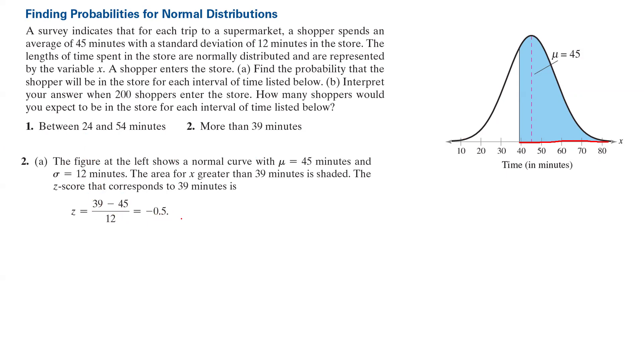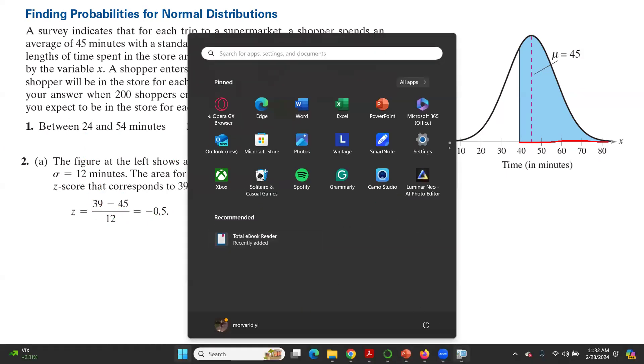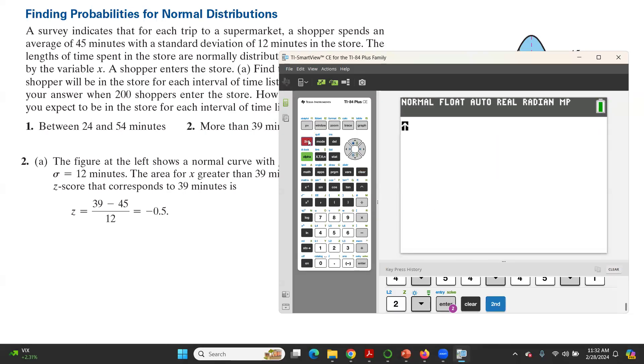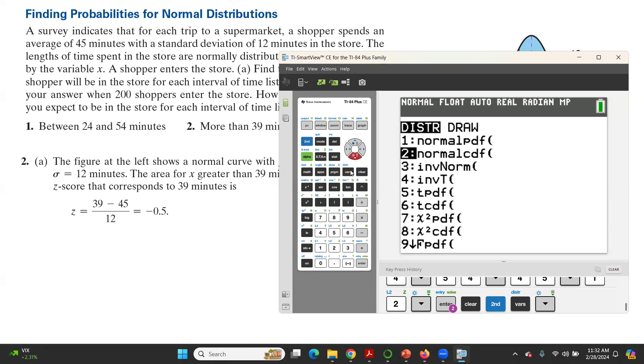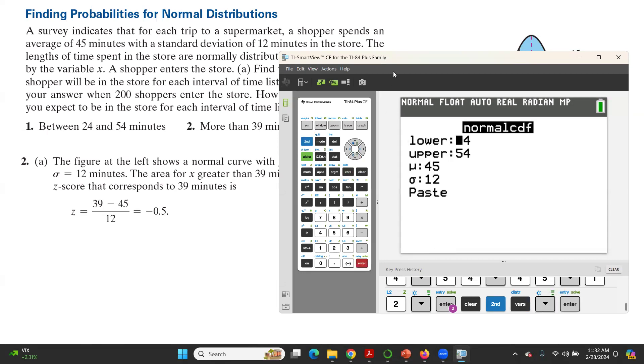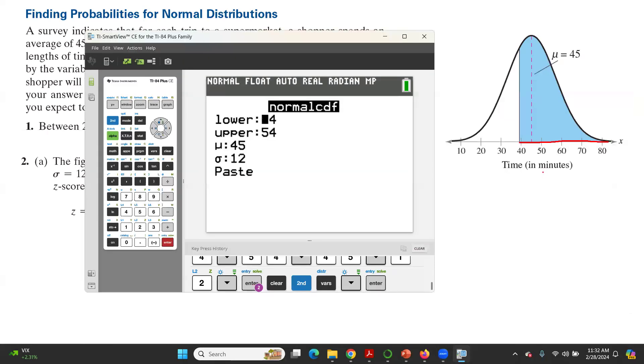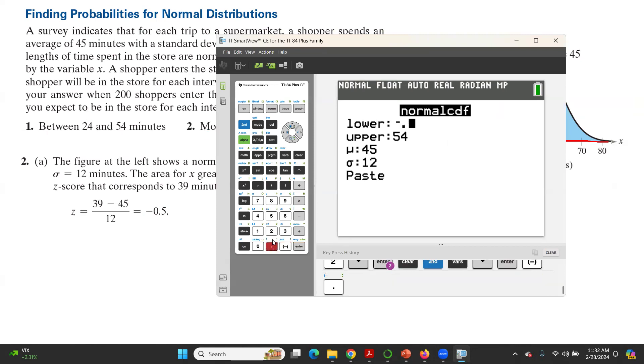If you decide to use your calculator, second DISTR, normalcdf. The lower bound, take a look at your graph, the lower bound is just right here. If you decide to use z, z is negative 0.5, so negative 0.5. On the right-hand side, it goes up to what? To a positive number like 10 or 100. The mean for z is 0. The standard deviation for z is fixed at 1.